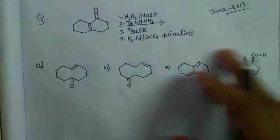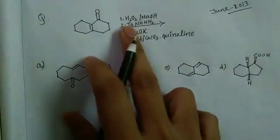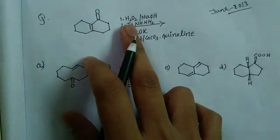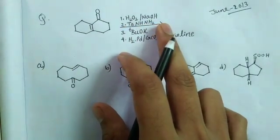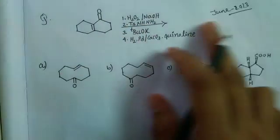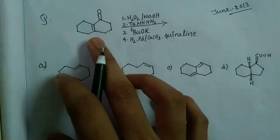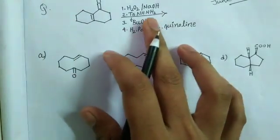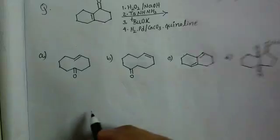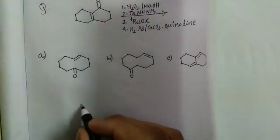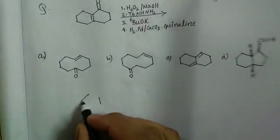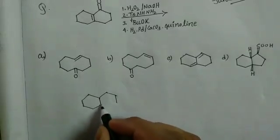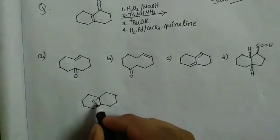The first reaction condition is hydrogen peroxide in the presence of sodium hydroxide. If you have an alpha-beta unsaturated ketone, it will undergo epoxidation. So the first reaction step is nucleophilic epoxidation, and that will result in the epoxide product shown here.